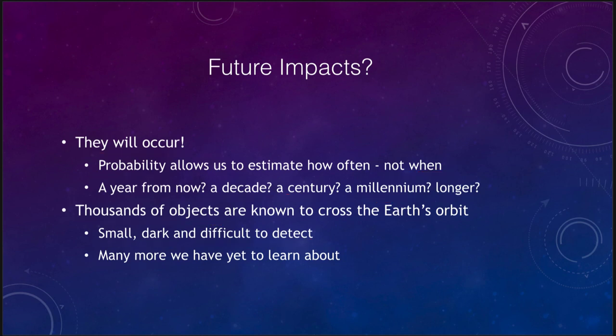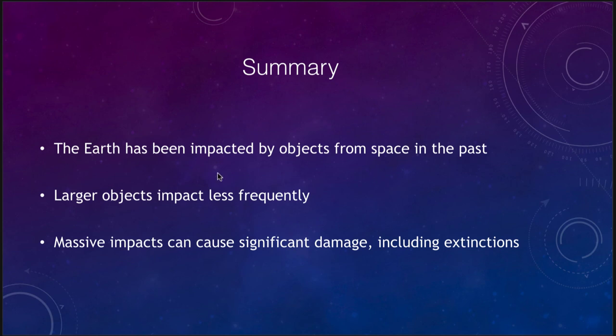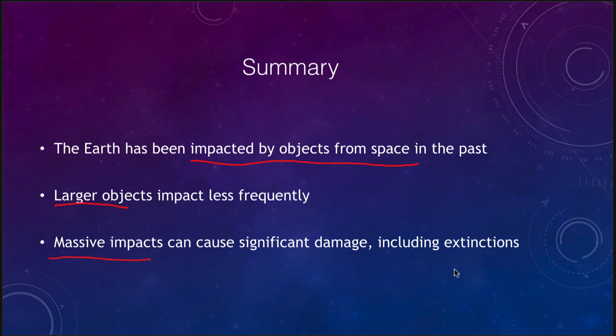In summary, we know the Earth has been impacted by objects from space in the past and we can see that evidence. Larger impacts occur less frequently and smaller impacts more frequently, but massive impacts can cause very significant damage including extinction-level events such as the one that killed off the dinosaurs. That concludes our lecture on large impacts here on Earth — we'll be back next time for another topic in astronomy.